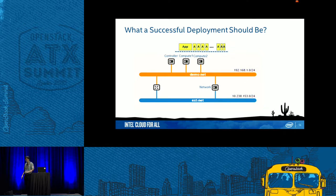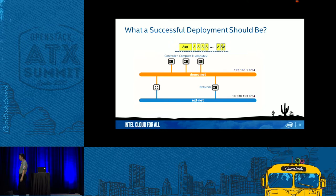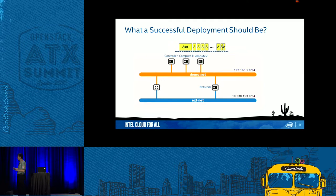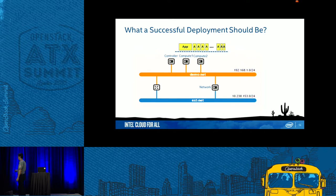This slide shows what a successful deployment should look like. Ideally with four virtual machines, students deploy one as a controller, two as compute nodes, and one as a network node. This is the basic infrastructure for their cloud application, on top of which they can deploy different applications on the compute nodes. This is the ideal architecture for students to follow.